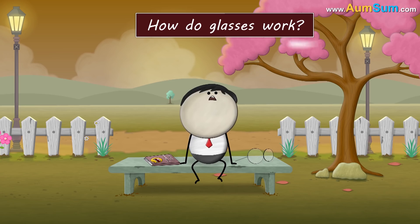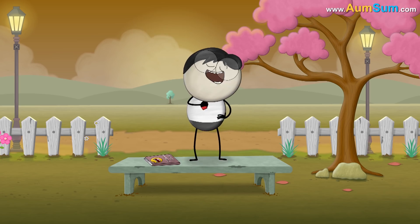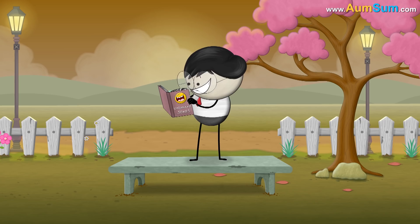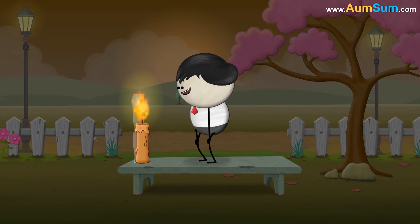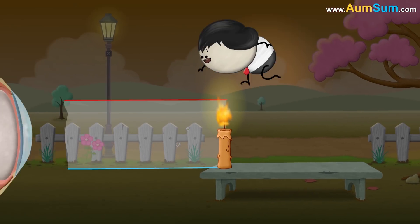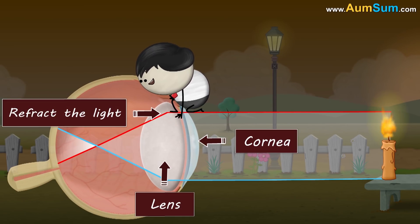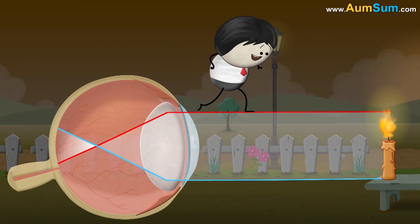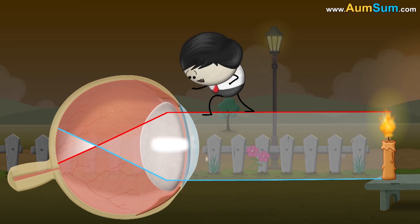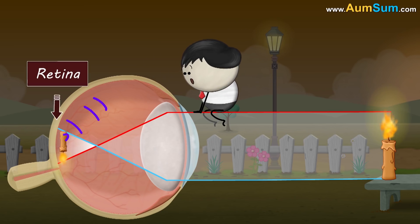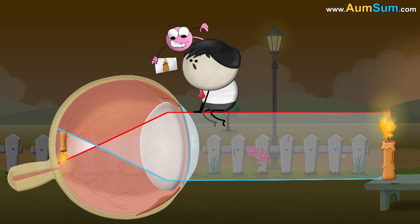How do glasses work? When light from an object reaches our eyes, the cornea and lens refract the light. In a person having perfect vision, the refracted light is accurately focused on the retina. The retina then sends information to the brain, informing it about the object.